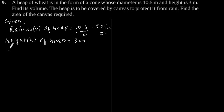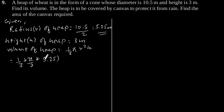Volume of heap will be 1/3 πr²h. Putting the values of r and h, we get 1/3 × 22/7 × (5.25)² × 3. By solving this, we get the volume of the heap of wheat as 86.625 cubic meters.